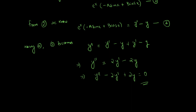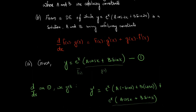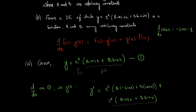For part b, the family of curves y = e raised to x into a cos 2x plus b sin 2x is very similar to part a — it just has 2x instead of x. Whenever we differentiate this function, we simply multiply by 2. That is, d/dx of cos 2x equals −sin 2x times 2. This factor of 2 must be included whenever we differentiate cos 2x or sin 2x. The rest of the steps remain the same — you can try that out.